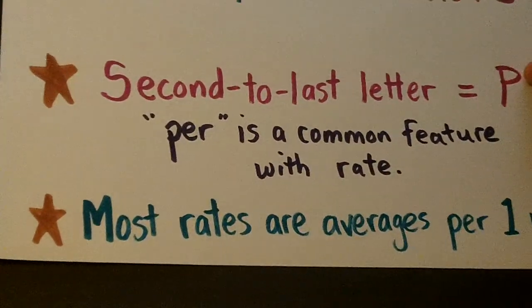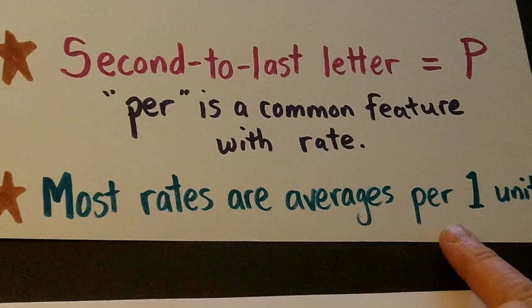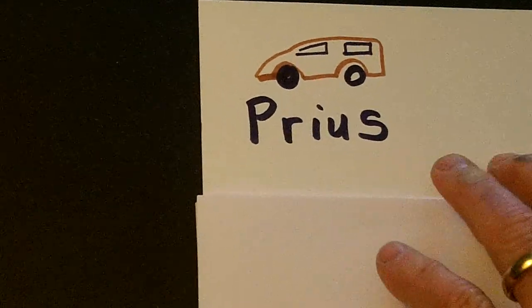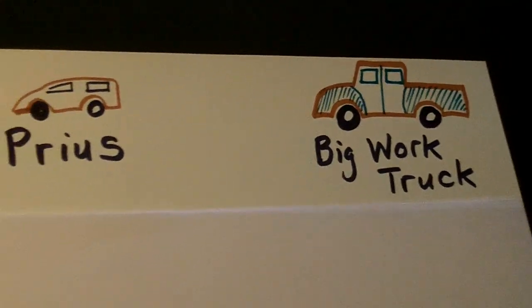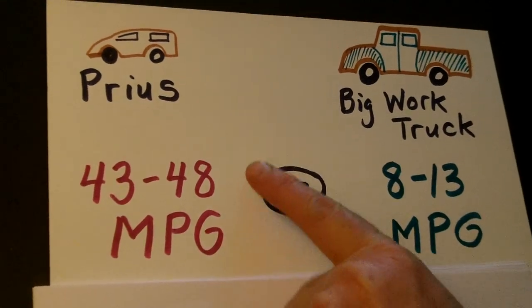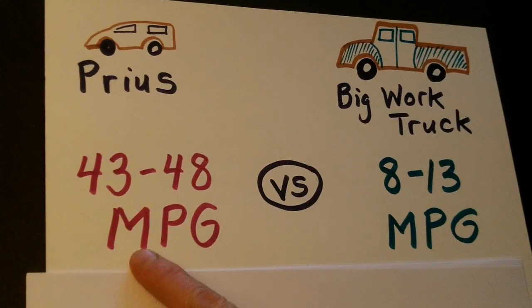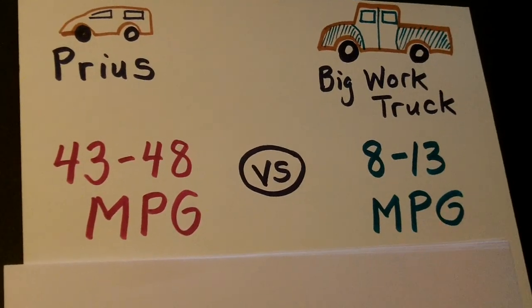Most rates are averages per one unit. For gas mileage, does a Toyota Prius burn the same amount of gasoline as a big work truck? Of course not. A traditional Prius may get 43 to 48 miles per gallon, whereas a big work truck might only get 8 to 13 miles per gallon.